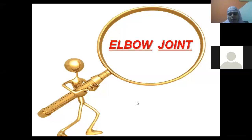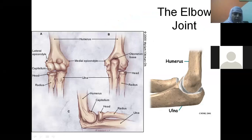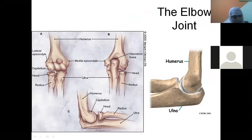We will be studying the elbow joint today. To study the elbow joint, you should remember all the features from the osteology of the humerus, radius, and ulna, because these bones participate in the formation of the elbow joint. At the lower end of the humerus, the articulating parts include the trochlea, which is like a pulley, and the capitulum.